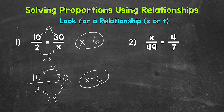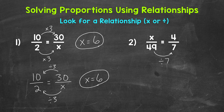Keep in mind that you can go from left to right or right to left looking for that relationship that uses either multiplication or division. Let's move on to number 2 where we have x to 49 equals 4 to 7. We need to see if we have a relationship between our ratios looking horizontally, so side to side. Let's take a look at the 49 and 7. We know that 49 divided by 7 equals 7. So what divided by 7 equals 4? Well, 28 divided by 7 equals 4. So x equals 28.